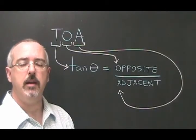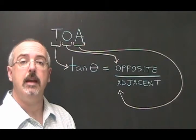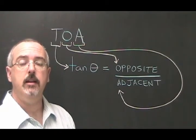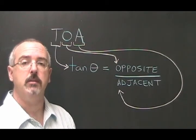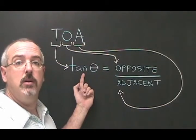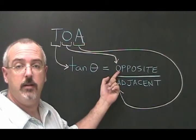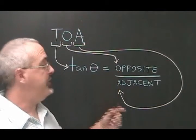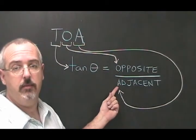TOA is a memory key to help you remember the TAN formula. The T in TOA stands for TAN which comes first in our formula. The O stands for opposite which comes on top, and the A stands for adjacent which comes last on the bottom.